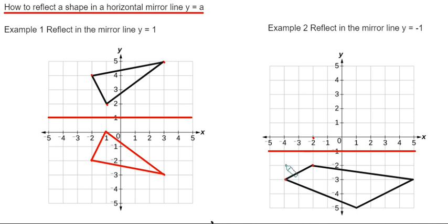This corner here would be 1, 2. 1, 2 on the other side. This corner here is 1, 2. 2 on the other side: 1, 2.